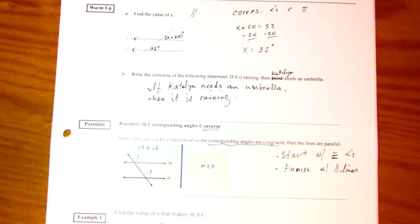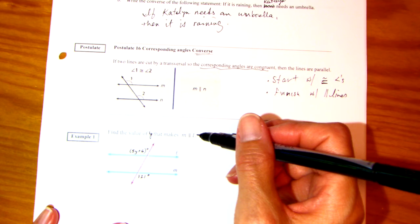Remember, before we started with parallel lines and then got congruent angles. Now it's the opposite. Example 1: Find the values of Y that make M parallel to L.